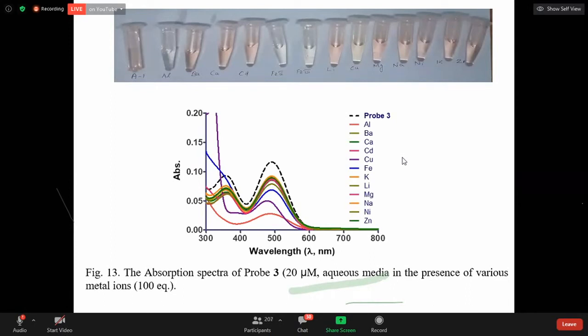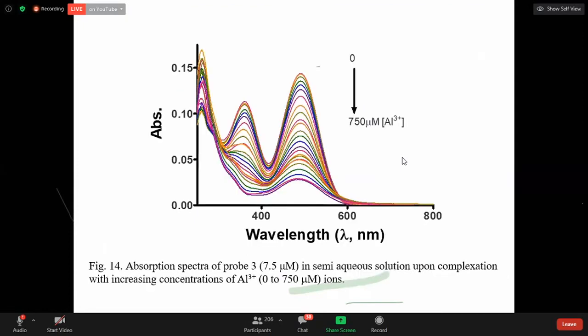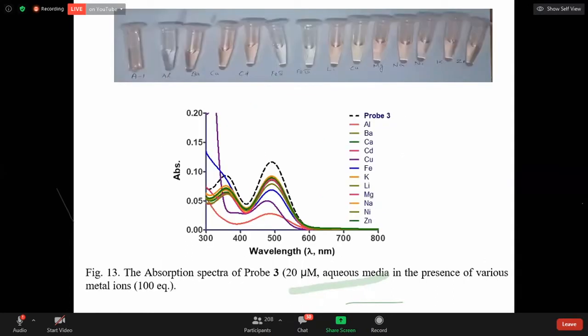We are adding probe 3 with different metals. What is the impact in absorption spectra? Above figure shows a naked eye detailed observation. You can say colorimetric sensor. There is transparent solution, and with aluminum and copper it becomes little transparent. Other metals when you add to probe 3, the color remains. So from this experiment you can confirm it is a colorimetric sensor for aluminum, copper, and iron.